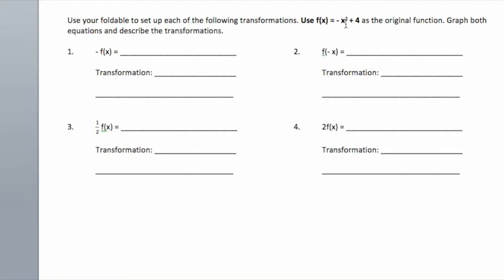We have negative x squared plus 4 as the original function, and they're asking us to do these transformations: negative f of x, f of negative x, one half of f of x, or two times f of x. We've been doing this by hand, but right now we're going to try to do it with a calculator.